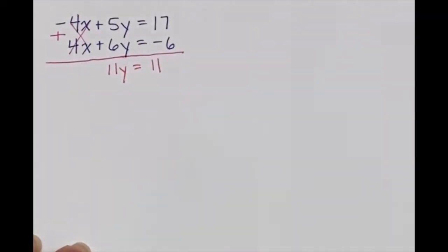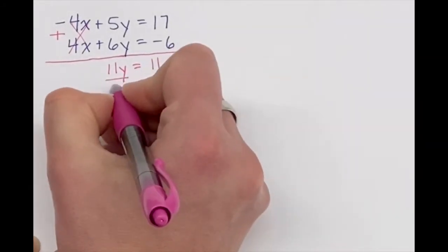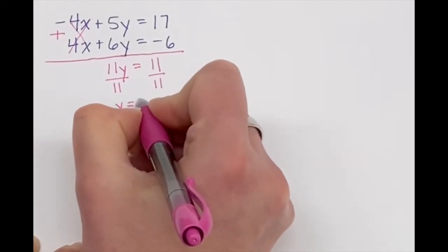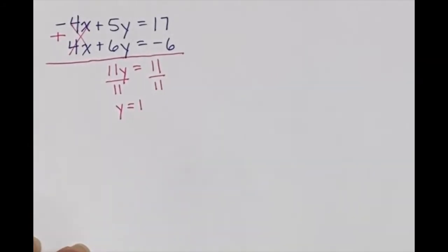Now you're left with a very simple one-step equation. 11y is equal to 11. To get y alone, you divide both sides by 11. So y is equal to 1.